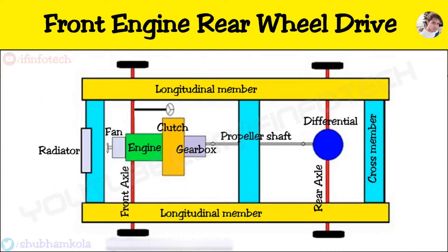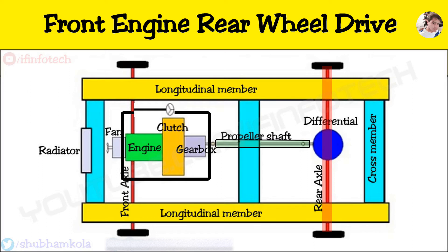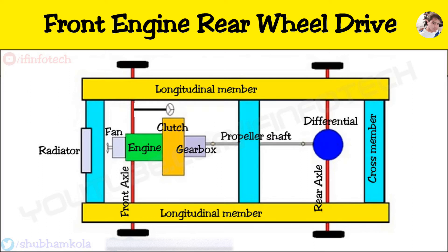In this layout, the front side has a mounted engine, clutch, and gearbox unit which drives the beam type rear axle through the propeller shaft with two universal joints. Here I will show you the function of each element and how power is transmitted to the rear axle to propel the vehicle.